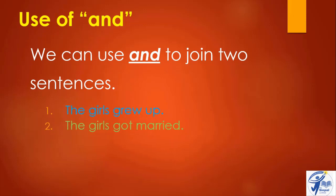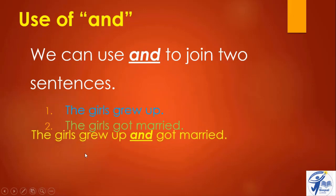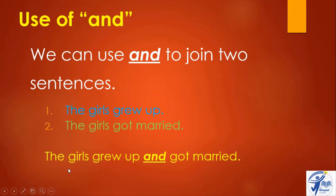For example, there are two sentences: 'The girls grew up.' and 'The girls got married.' Now, using the conjunction 'and', we combine them into one sentence: 'The girls grew up and got married.'